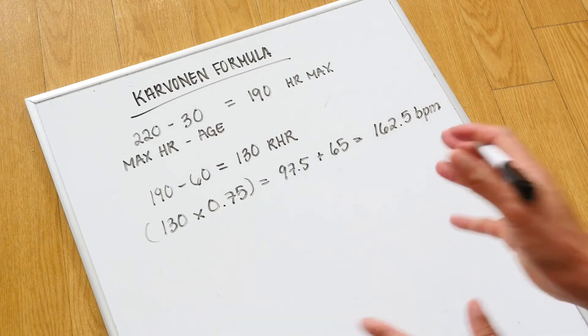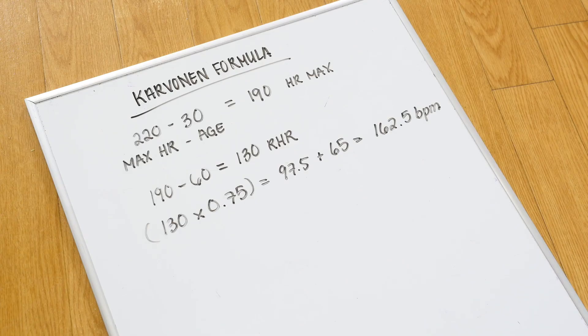So go ahead and take the time to plug in your age and your heart rates to calculate your training zones with the Karvonen formula. Thank you.